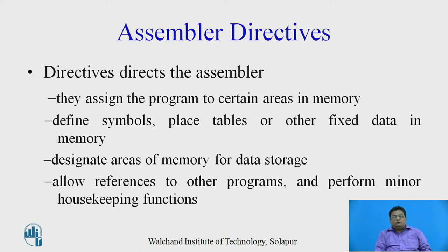Assembler directives are the directions given to the assembler. Directives tell the assembler what to do. Directives are mainly used to assign the program to certain areas in memory. Directives are also used to define the symbols, place tables or other fixed data in memory. Directives designate areas of memory for data storage, allow references to other programs, and perform minor housekeeping functions.